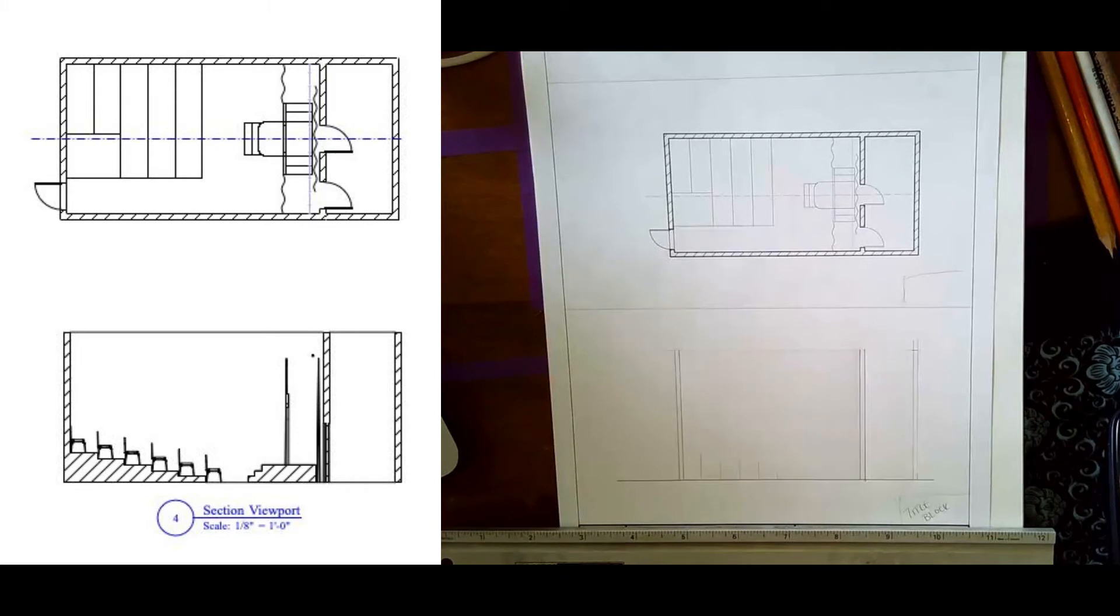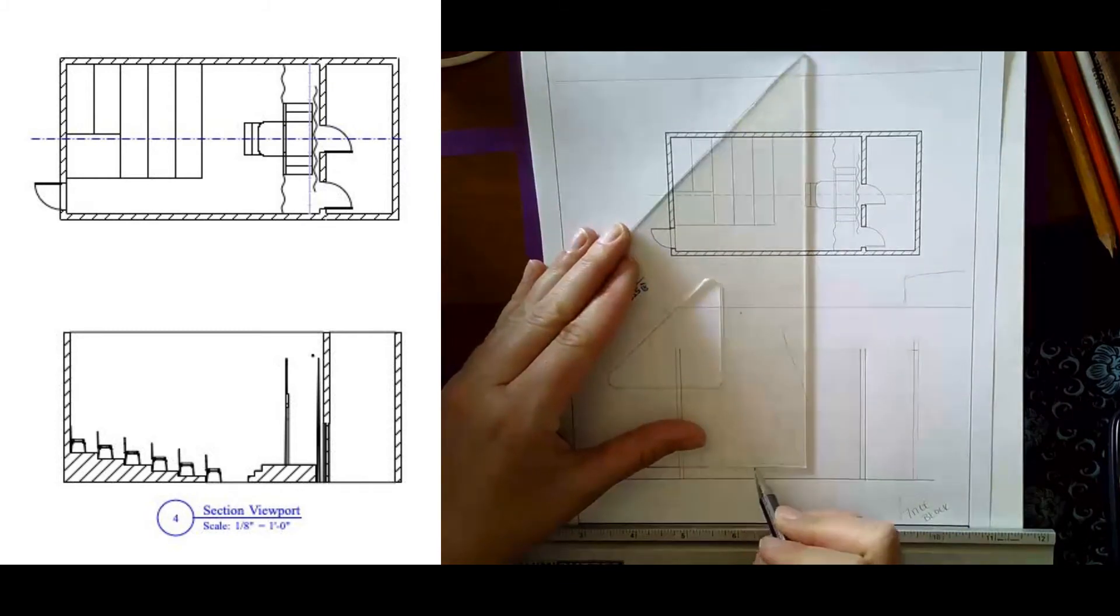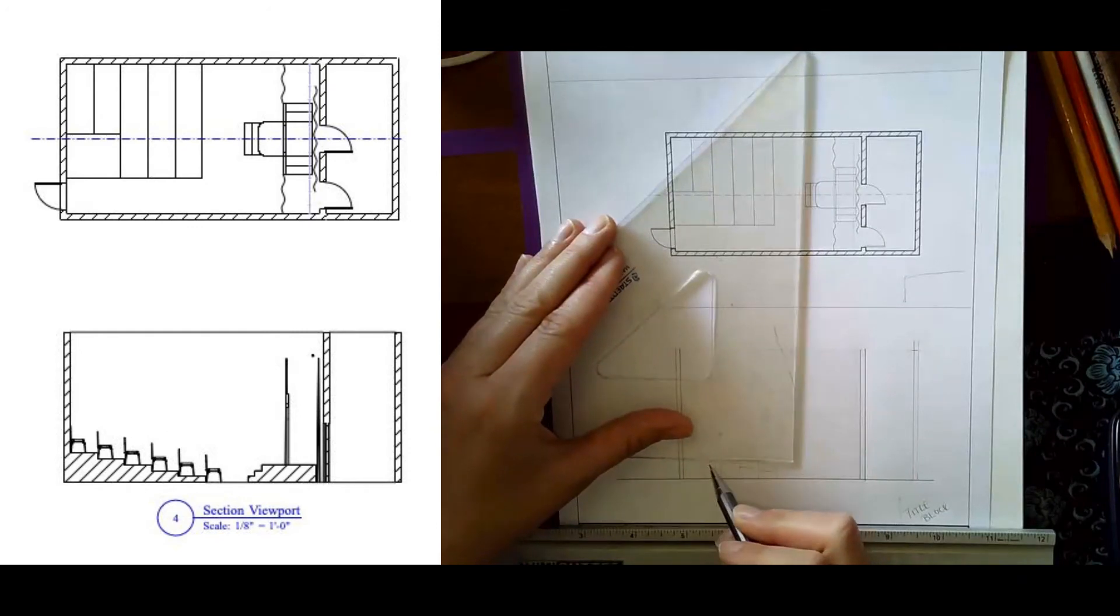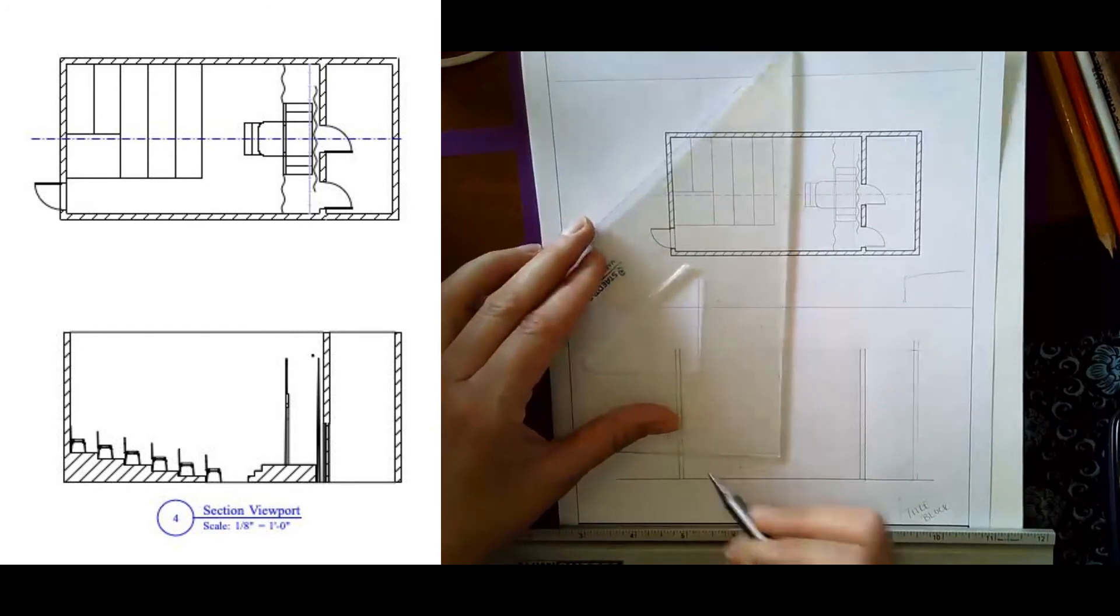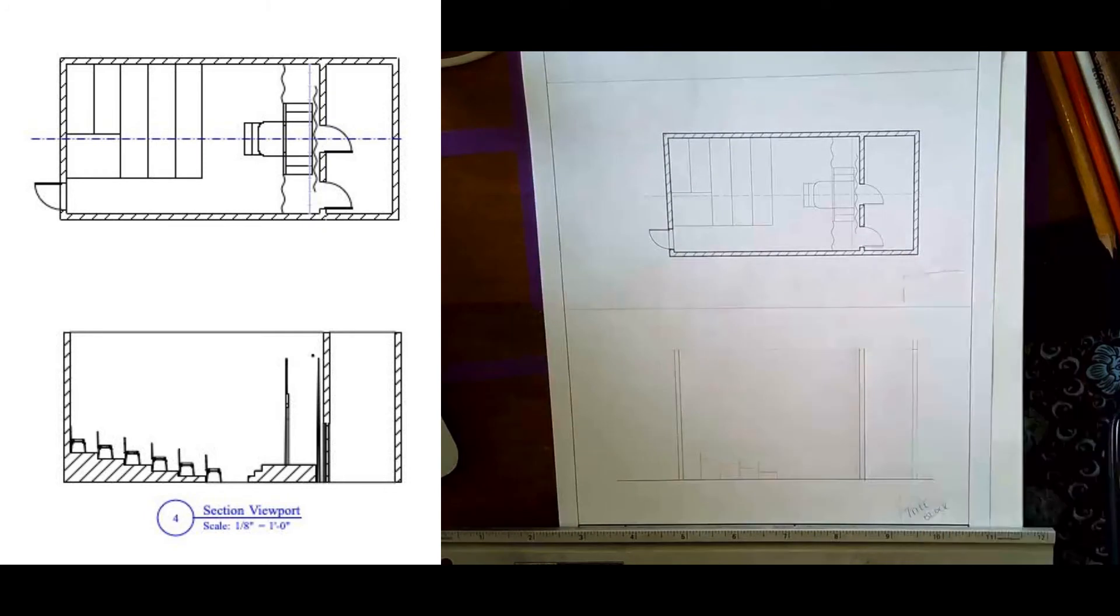I'm going to flip over and show you, just make the Vectorworks image itself visible. So that gives me this whole seating area drawn into my section view. So you would just come in then and measure in order to get the heights of each of these things. And then you would erase out any lines you don't need so that it looks like it does in the example on the section viewport assignment sheet.